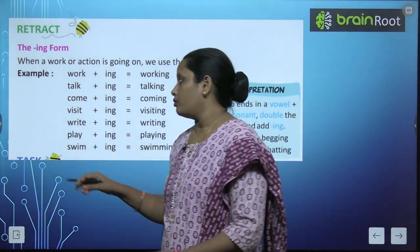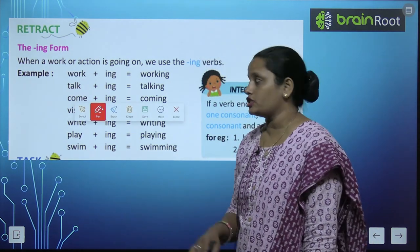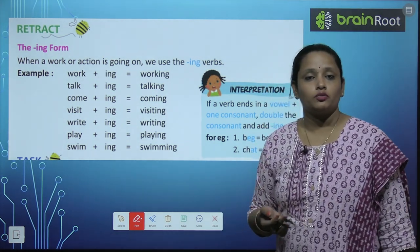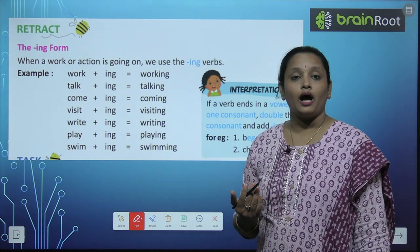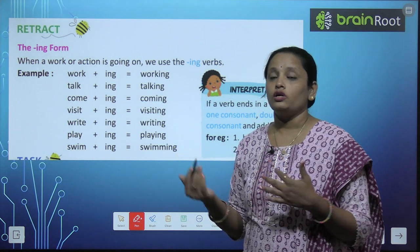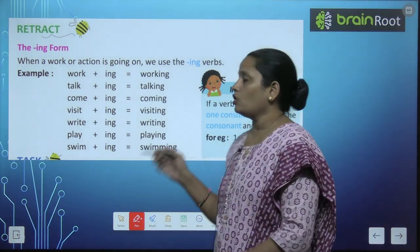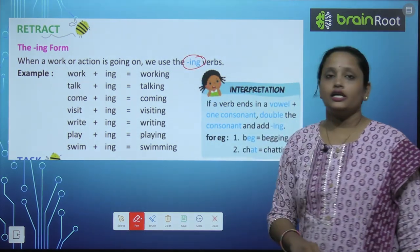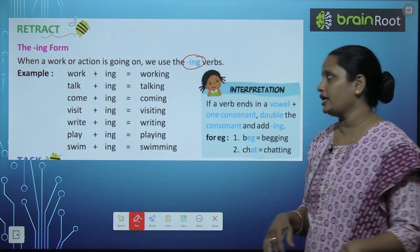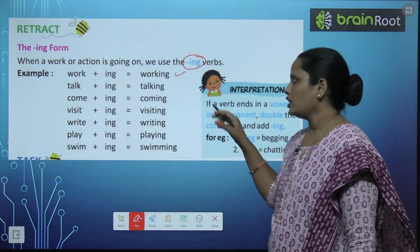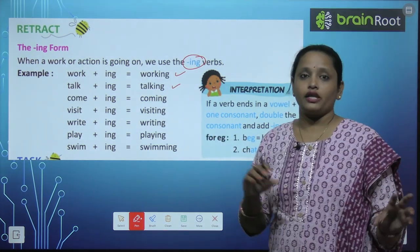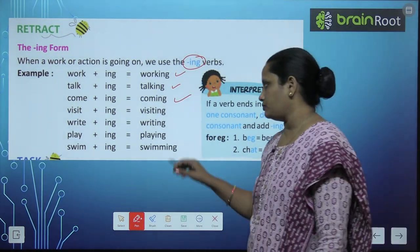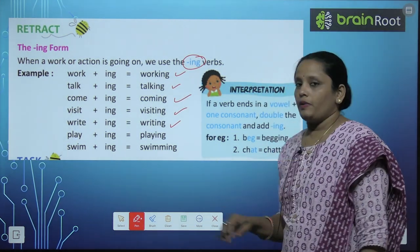Now the ING form. Action words hum ne padh liya. Ab ING form kya hota hai? In action words mein ING ko add kar dena. When a work or action is going on, we use the ING form. Jab koi kaam chal raha hai, to usme hum ING add kar dete hain. Jaise: work + ing = working, talk + ing = talking, come + ing = coming, visit + ing = visiting, write + ing = writing, play + ing = playing.